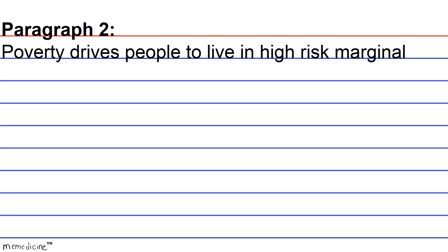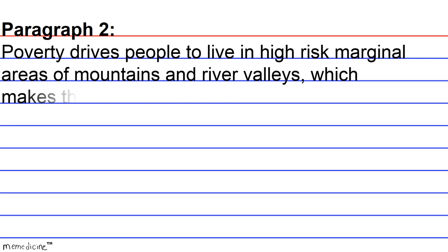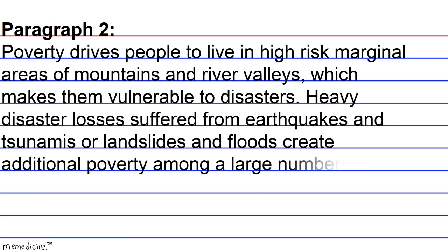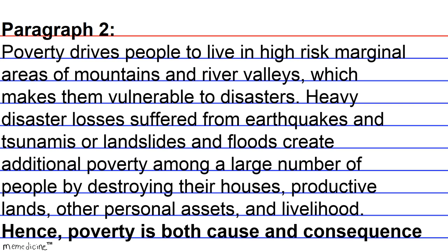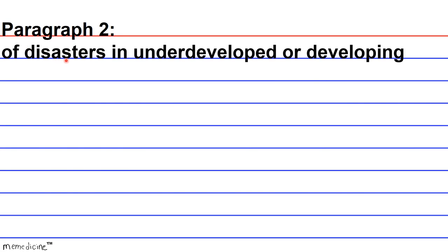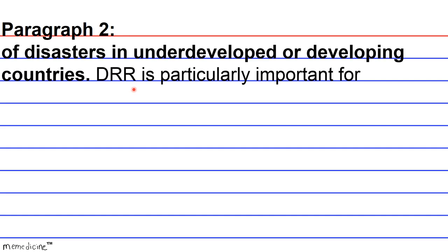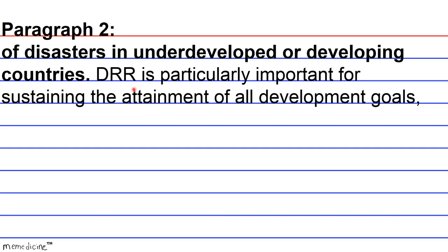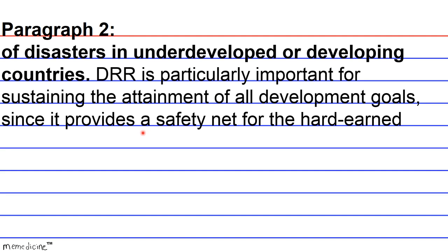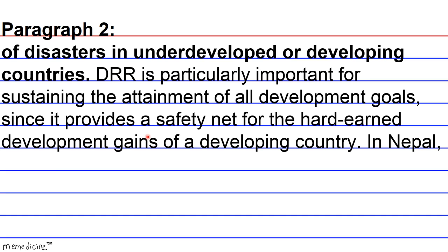HFA highlights the risks for people living in high-risk marginal areas such as mountains and river valleys, particularly in underdeveloped or developing countries. DRR is particularly important for sustaining the attainment of all developmental goals, since it provides a safety net for the hard-earned development gains of a developing country.